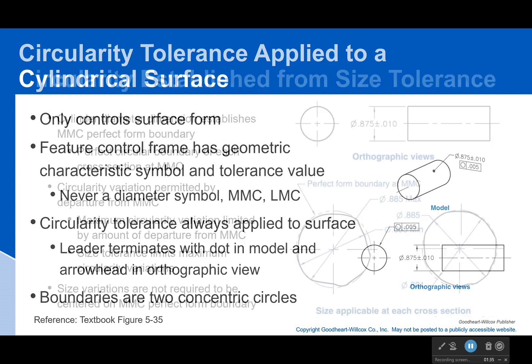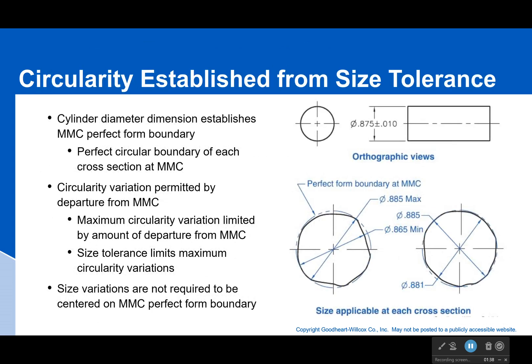The boundaries for circularity are two concentric circles. What we've seen for everything else is that there is a perfect form boundary, and just like with that, it will establish a certain amount of circularity tolerance. So if we move towards the perfect form boundary, we're not able to break it, and that will constrain the circularity.